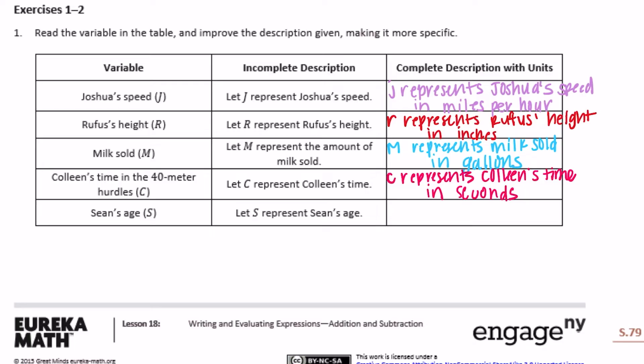And then the last one: Sean's age. Let S represent Sean's age. Is it Sean's age in months, years, days? Usually we calculate people's age in years, unless you're a baby. So let's go with years — S represents Sean's age in years.